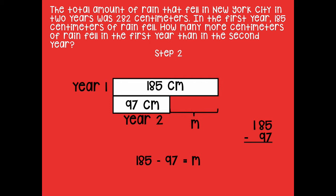All right, here we go. I'm going to subtract: 5 ones minus 7 ones — can't do it, so I decompose a ten. That leaves 7 tens and 15 ones. 15 minus 7 is 8. Then 7 tens minus 9 tens — I can't do that, so I decompose a hundred into 10 tens, giving me 17 tens. 17 tens minus 9 tens is 8. So M equals 88, and M represents how many more centimeters of rain fell in the first year than in the second year.